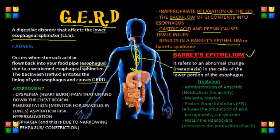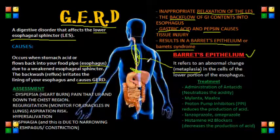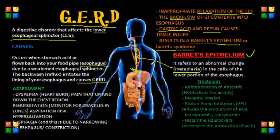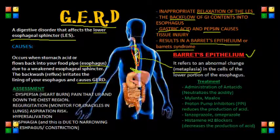These goblet cells are normally found in the GI tract. The problem is that there is a strong association between Barrett's esophagus and esophageal adenocarcinoma — essentially esophageal cancer. This makes Barrett's esophagus a pre-malignant condition that we need to be aware of.